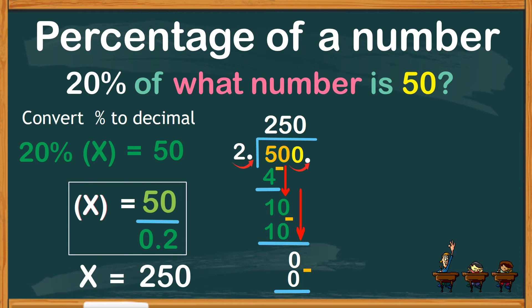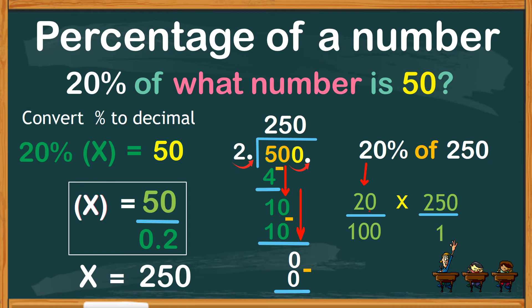Let's check if our answer is correct. Let's see if 20% of 250 is equals to 50. 20% is 20 over 100 times 250, with 1 of course as the denominator. Cancel the two zeros in the fraction above. Do the same with the two zeros below. We now have 2 times 25, which is 50. Therefore, our answer is correct.